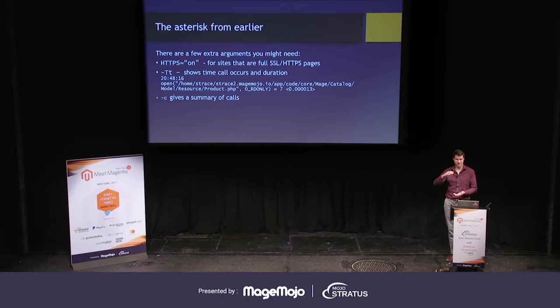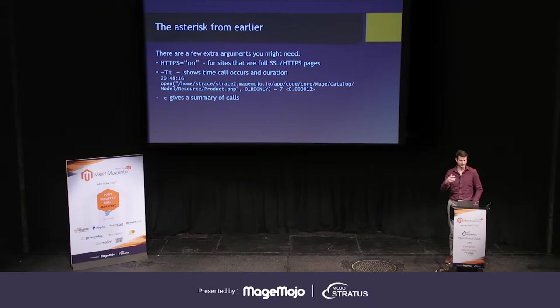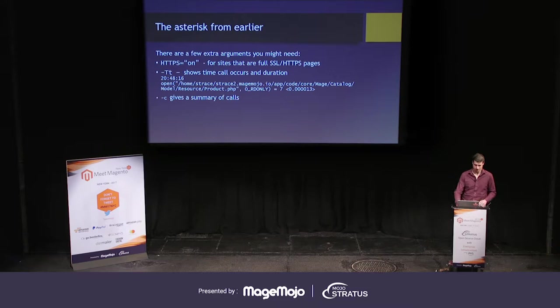You can use the minus-C flag, which will give you a little table at the end showing the types of calls, the number, and how much time they took. That's not particularly useful in the Magento cases we see on our support side, because typically you're going to see the other problem in the trace itself. But if you do want a summary, it might point out the IO load more obviously. Tools like Blackfire will also show you IO load.